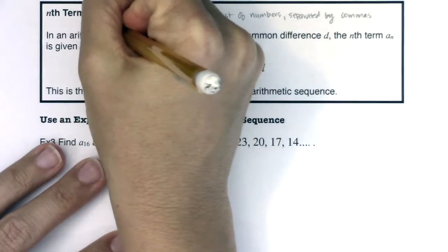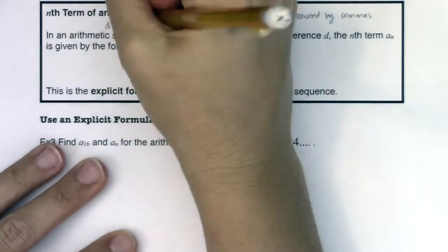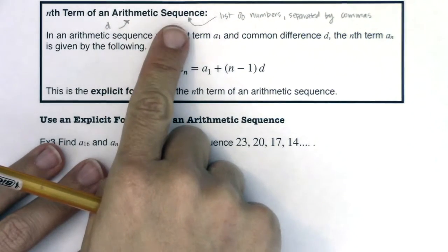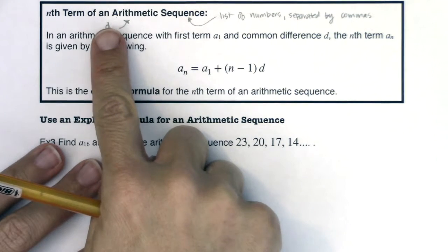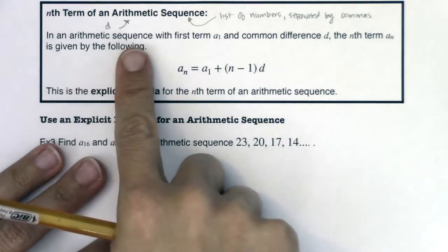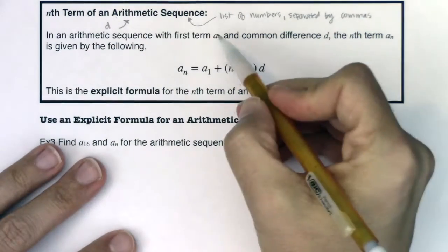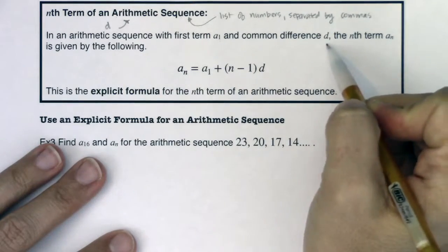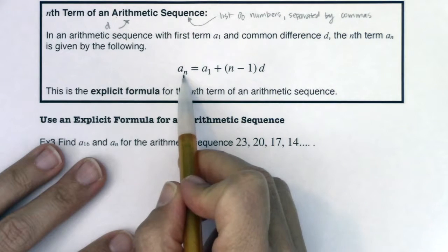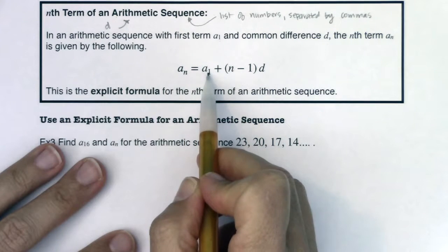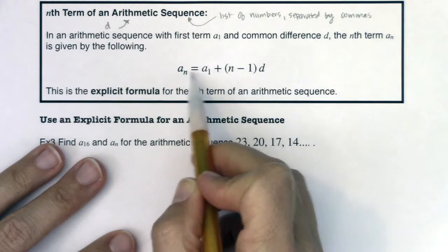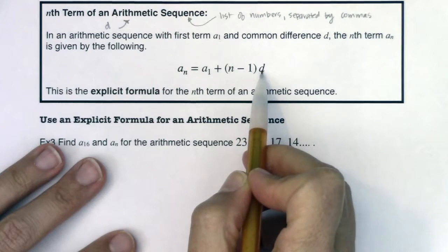When you hear arithmetic, I want you to think there's a common difference involved. We will also look at geometric sequences, and that has a different letter associated with it. In an arithmetic sequence with first term a_1 and common difference d, the nth term a_n is equal to a_1 plus n minus 1 differences.